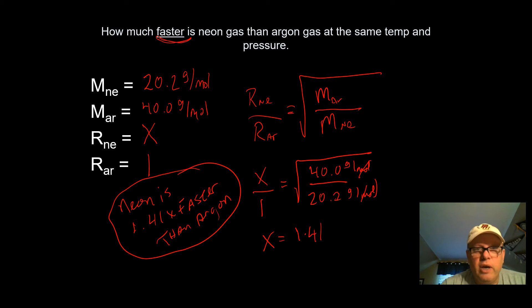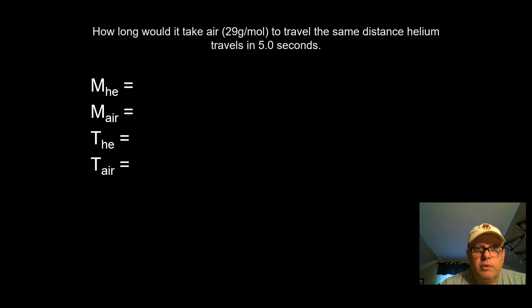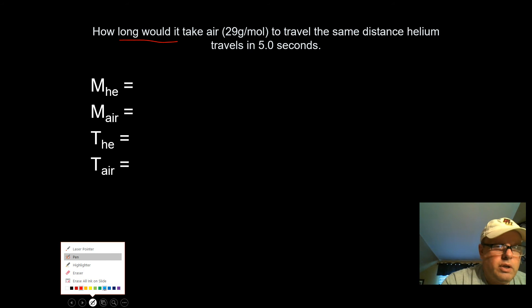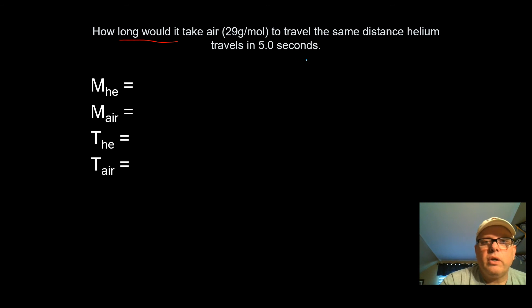Let's take a look at a second example here. This one is with time. Now, how long would it take air at 29 grams per mole to travel the same distance as helium in five seconds? So this is times. We're talking about how long. And I'm just going to switch colors here because I feel like it. We've got helium's time. Now, helium is given 5.0 seconds here. The sound in the background is the cat. The time of air is what we'd like to find. So the molecular mass of helium is 4.0 grams per mole. And the molecular mass of air is 29.0 grams per mole.